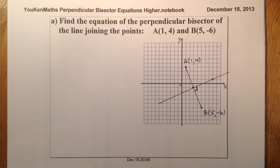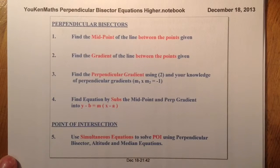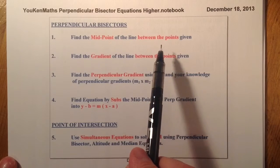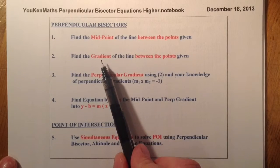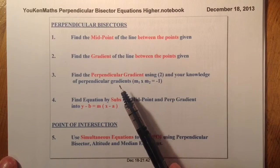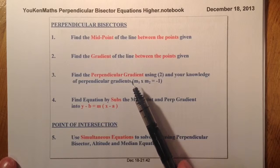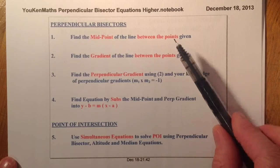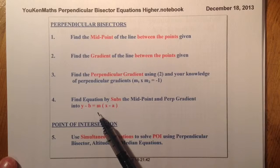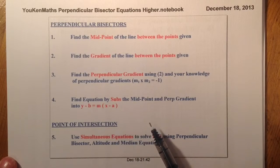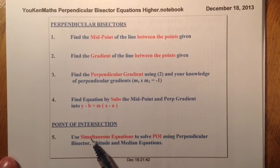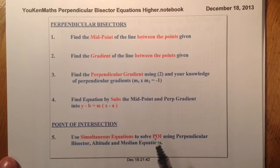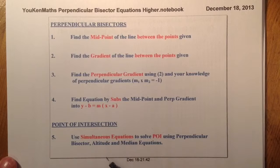Let me show you the process we're going to follow. First, I'm going to find the midpoint of the line between the points given. I'm then going to find the gradient between the points. I'll then flip that and find the perpendicular gradient. Once I find the perpendicular gradient, I'll substitute it and the midpoint into the equation of a straight line.